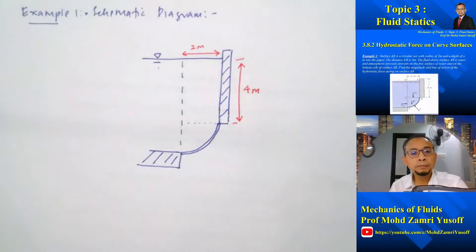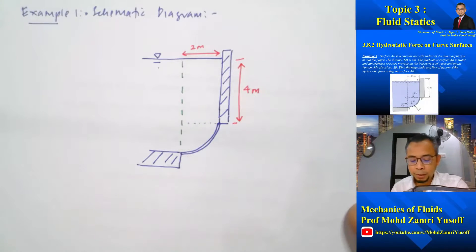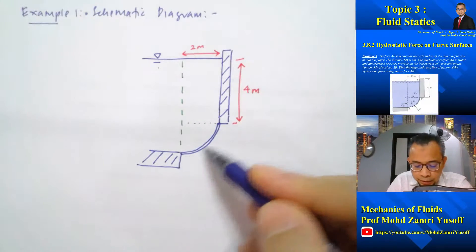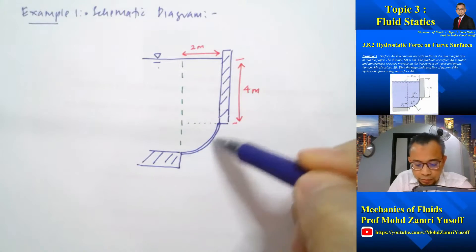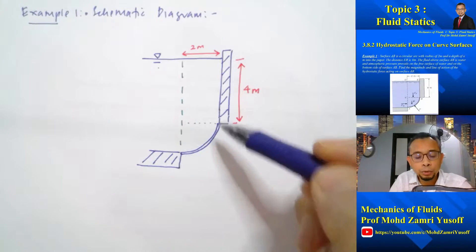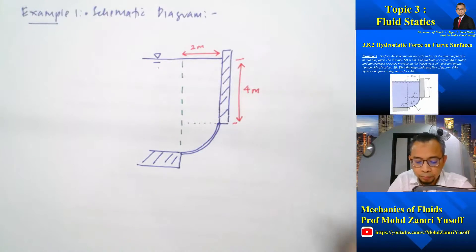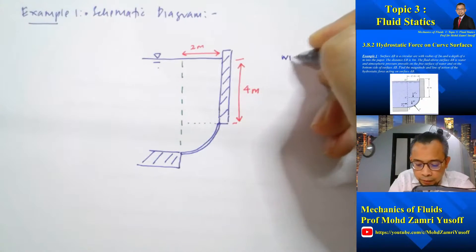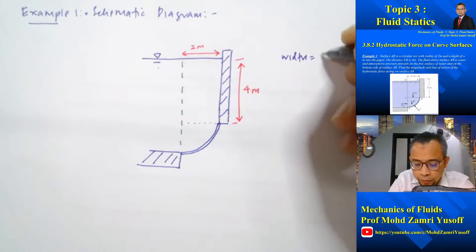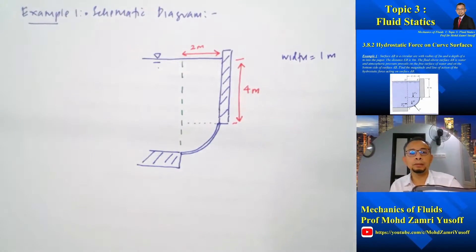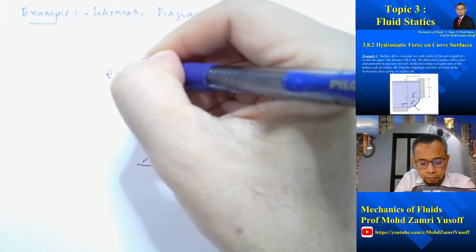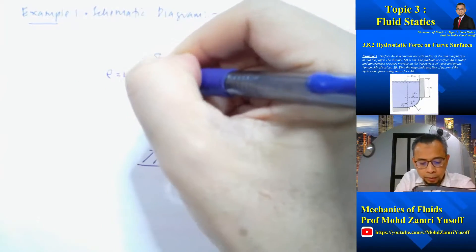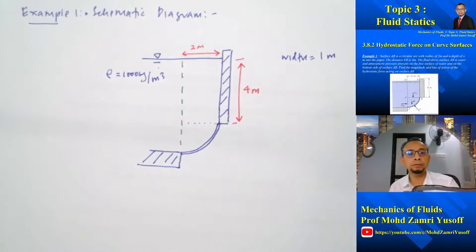Let us first consider the schematic diagram of the problem. This is the curved gate. The radius of the curved gate is equal to 2 meters, the width is equal to 1 meter, and the density is equal to 1000 kg/m³ because it is water.